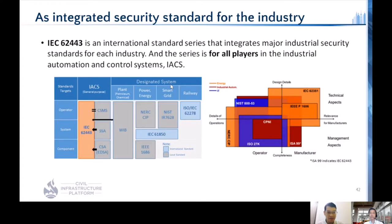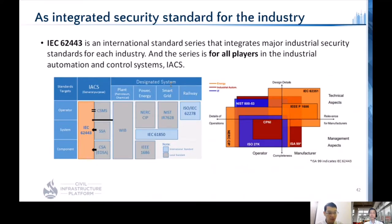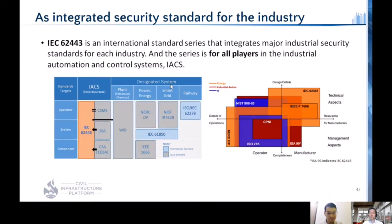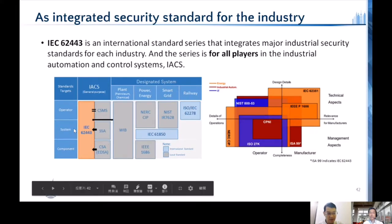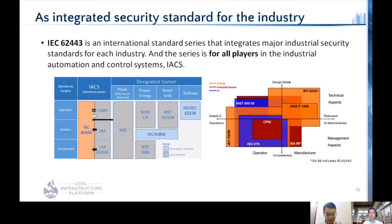IEC 62443 is an international standard series that integrates major industrial security standards for each industry. For operators, building a secure supply chain with reliable equipment is very important to keep the control system secure. Systems and components in control systems need to be implemented with a secure development process, and their security features should be measured by the latest cybersecurity standards. We use IEC 62443 to enhance security in the CIP platform and to reduce cyber risk.